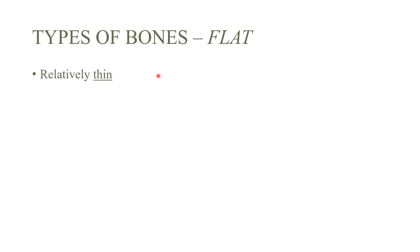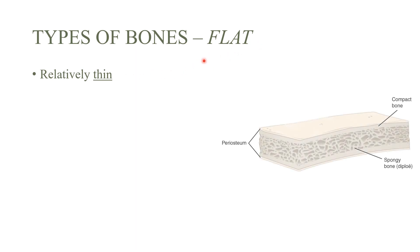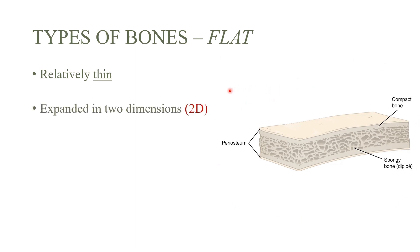First we have the flat bones. The answer is in the name — they're flat, or kind of thin. This is what a flat bone would look like. They expand the most in two dimensions — they are 3D of course, but they expand most in width and in length, so they can be fat, thin, long, or short.